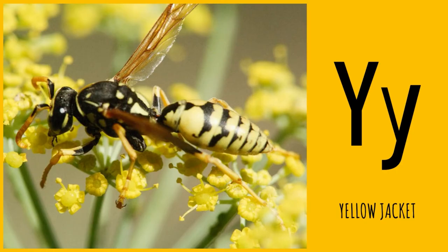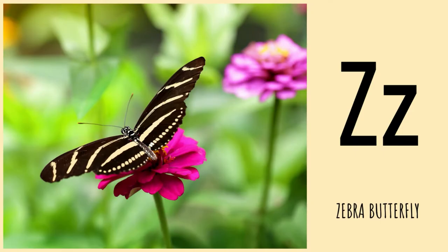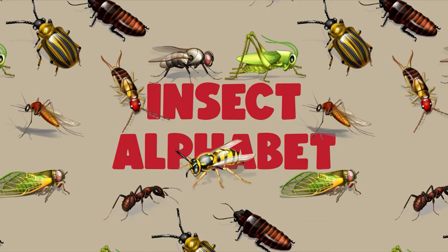Y is for yellow jacket, yellow jacket. Z is for zebra butterfly, zebra butterfly. Good job, Sprouts! See you next time.